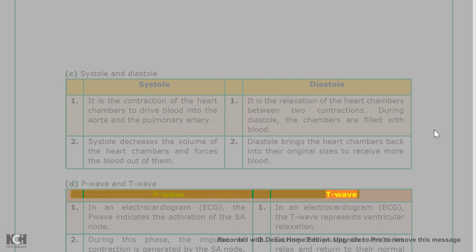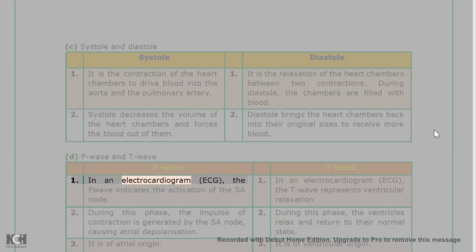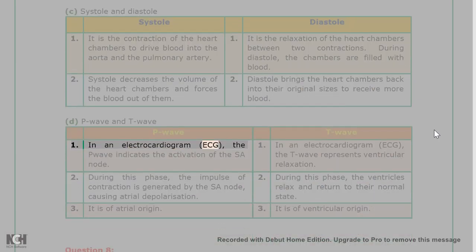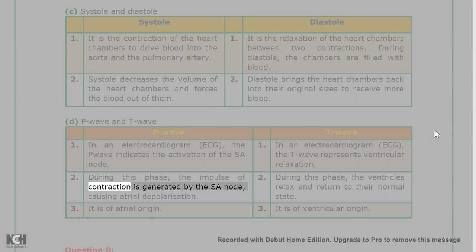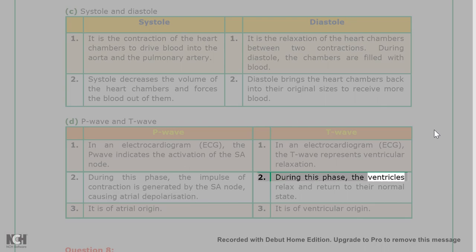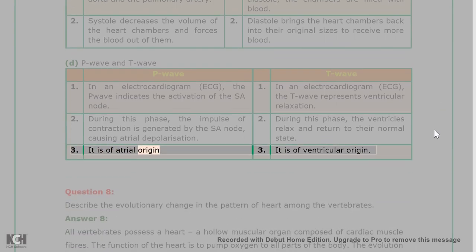Question 7D: P-wave and T-wave. In an electrocardiogram (ECG), the P-wave indicates the activation of the SA node; during this phase, the impulse of contraction is generated by the SA node, causing atrial depolarization. The P-wave is of atrial origin. The T-wave represents ventricular relaxation; during this phase, the ventricles relax and return to their normal state. The T-wave is of ventricular origin.